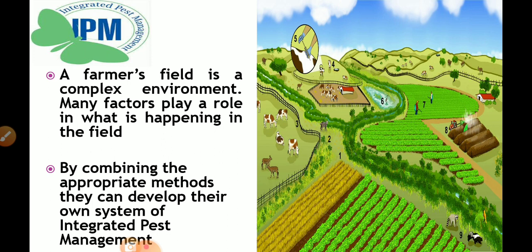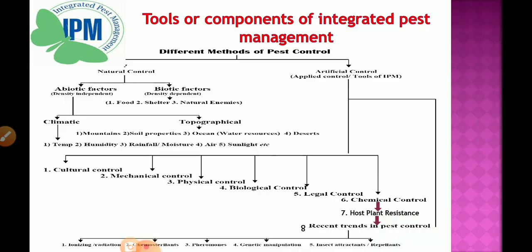By combining appropriate methods, farmers can develop their own system of integrated pest management. Different types of management practices are available to minimize the pest population. Many experiments have already been conducted, and from these, any one method or combination of methods can be used to finally control and manage pests.